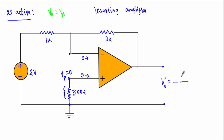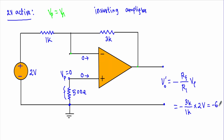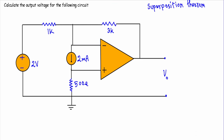For an inverting amplifier, we use the formula: VO prime equals minus RF divided by R1 times VI. Here RF equals 3 kΩ, R1 equals 1 kΩ, and VI equals 2 volts. This gives VO prime equal to minus 6 volts.